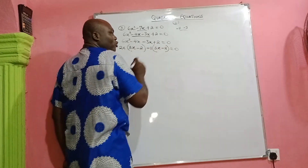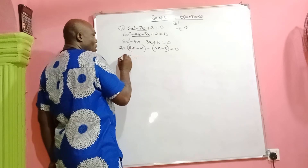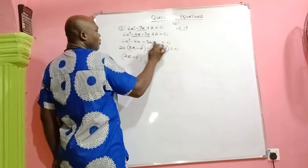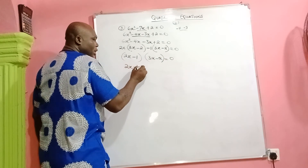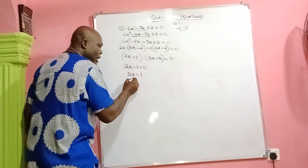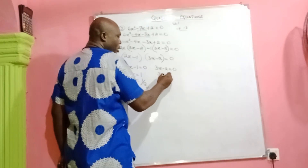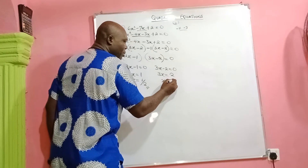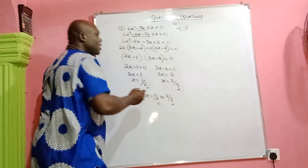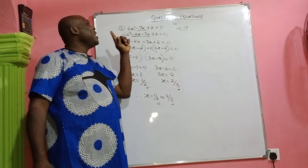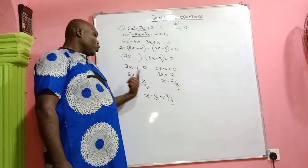So we have (2x - 1)(3x - 2) = 0. If 2x - 1 = 0, then 2x = 1, so x = 1/2. If 3x - 2 = 0, then 3x = 2, so x = 2/3. Therefore, the roots of the equation are x = 1/2 or x = 2/3. Take note: anytime the coefficient of x² is greater than 1, either one or both of the roots will be a fraction.